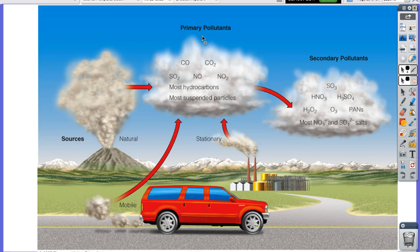There are lots of sources of air pollution — natural sources like volcanoes, which are a big source of sulfur, along with cars and smokestacks. They emit all these different pollutants, and those pollutants can be converted to other things that have health or environmental consequences.